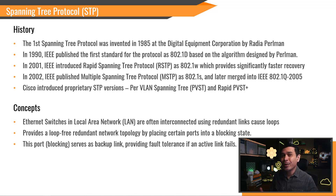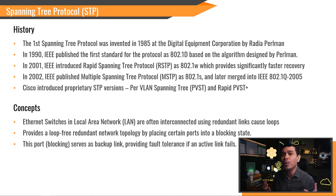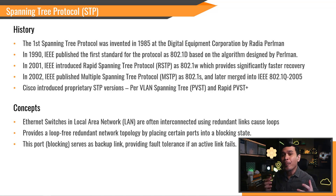How does it work? Ethernet switches' local area networks are often interconnected using redundant links, and this creates switching loops, resulting in broadcast radiation and MAC table instability. So the solution for a loop-free redundant network topology is, guess what? STP. And how does it work to prevent loops? By placing certain ports in a blocking state. Ports in blocking state serve as backup links, providing fault tolerance if an active link fails.